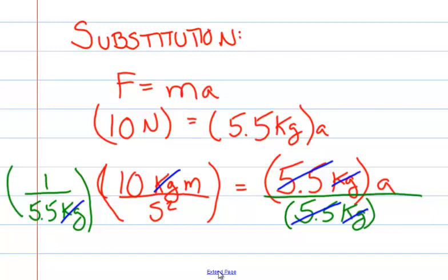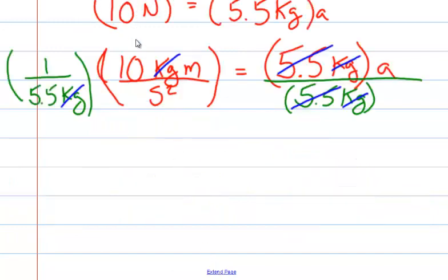Writing what we're left with: acceleration equals 10 meters over 5.5, and the units on the bottom are seconds squared.